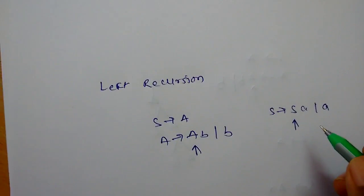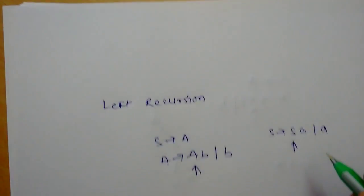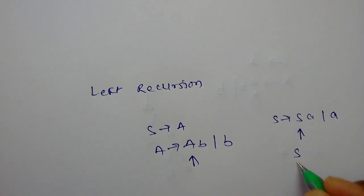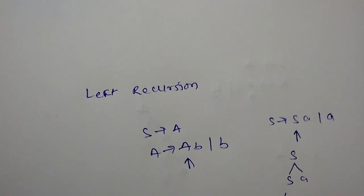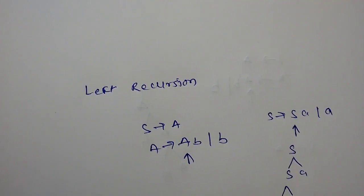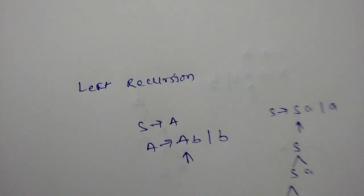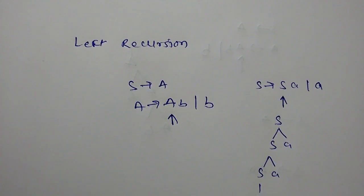This is called left recursion. Left recursion is not good for our top-down parser because if I create a tree, then it always can grow in the left-hand side and it will keep on growing. So we need to remove this left recursion.